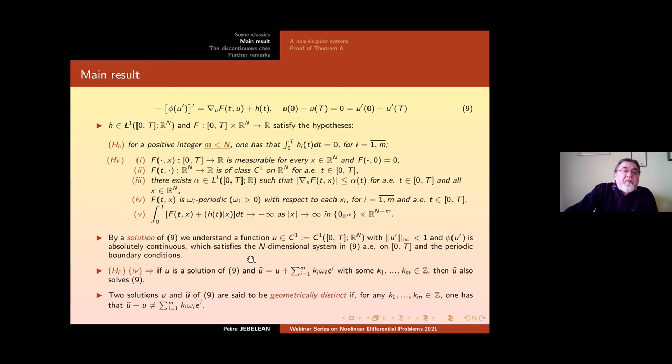First, by a solution of 9, we mean a function u of class C^1 with the norm of the derivative less than one. φ(u') is absolutely continuous, which satisfies this n-dimensional system and the boundary conditions.